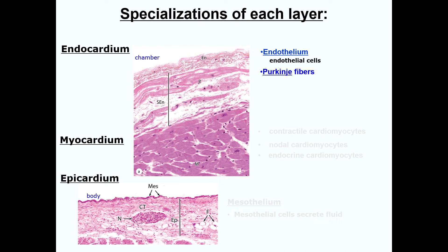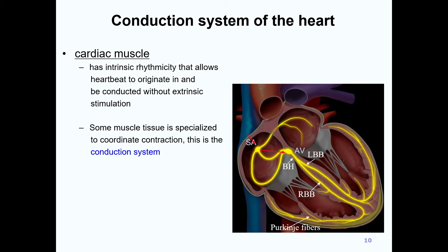We've already discussed some of the characteristics of endothelium and endothelial cells, and we'll go into greater detail about their functions when we discuss vasculature. So what then are Purkinje fibers, and what is their function? To answer these questions, we need to look at the conductive systems of the heart. The heart has an intrinsic rhythmicity that allows our heartbeat to begin and be conducted without external stimuli. The heart has two specialized conductive systems which coordinate contraction and are functionally connected. We'll just skate over the surface details here.